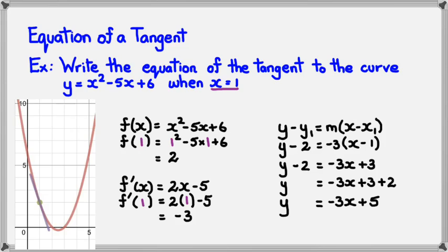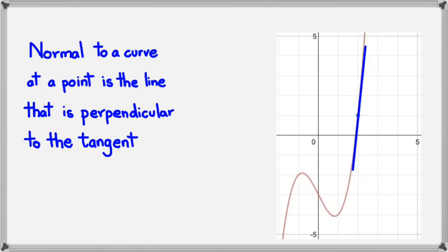Moving on from here, the next thing that we need to have a look at is a normal to a curve. Now basically, a normal to a curve at a point is the line that is perpendicular to the tangent. So in this case, I'm still working with that same example. I know that the blue line is actually the tangent when x = 2. So if it's perpendicular, I'm looking at the pink line here, which is called the normal, and that has to be at 90 degrees or perpendicular.